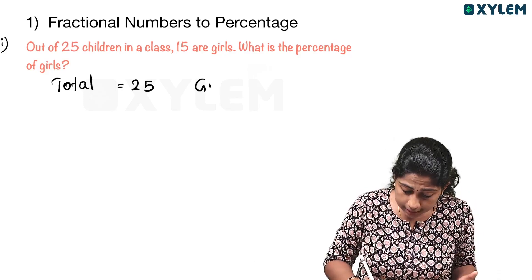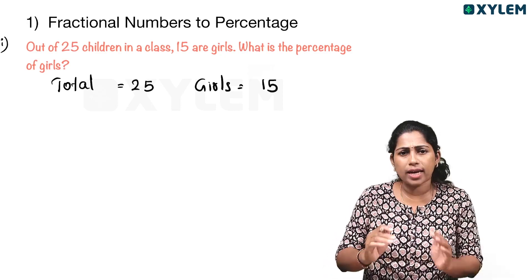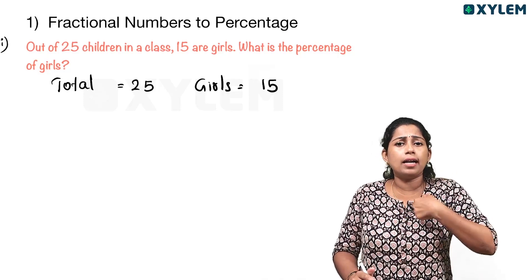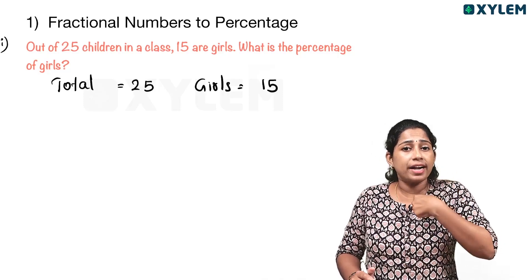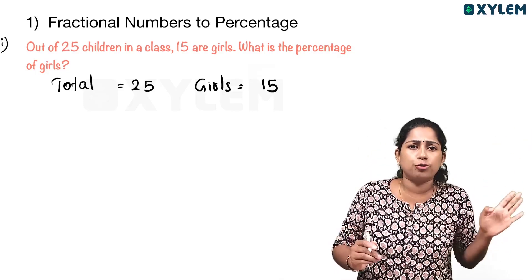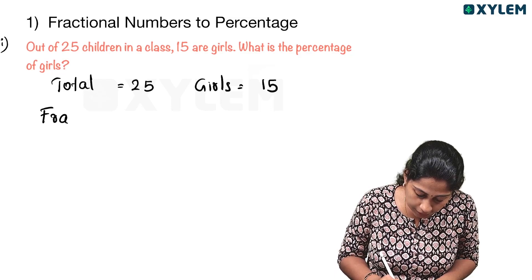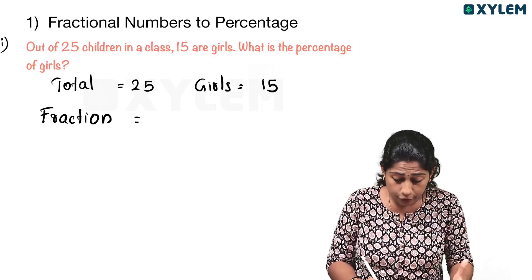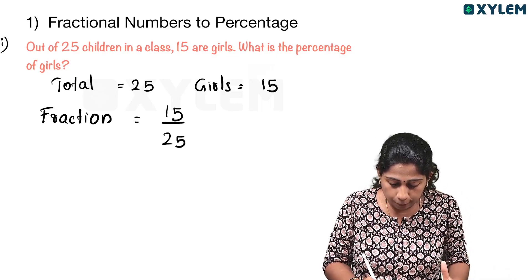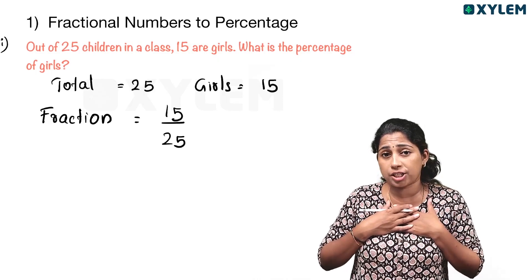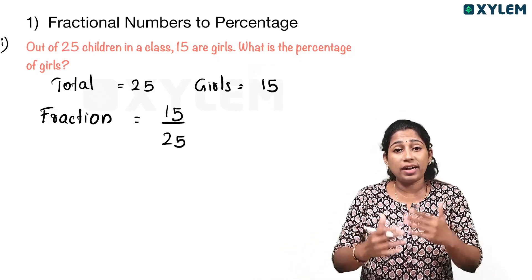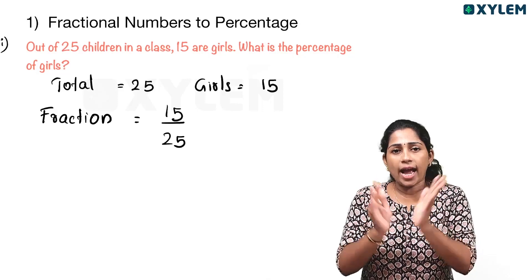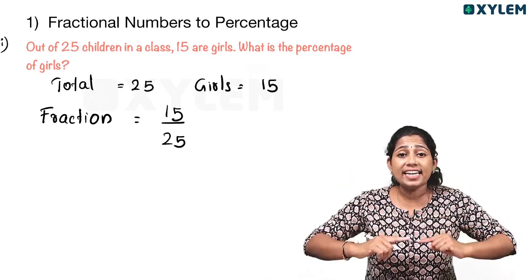There are 15 girls. So the fraction is equal to — how do we get this fraction? How do we get girls as a fraction? 15 upon 25. 15 girls out of 25 students. Total number of students is 25. So 15 upon 25 is the fraction. 15 divided by 25. How do we get percentage?